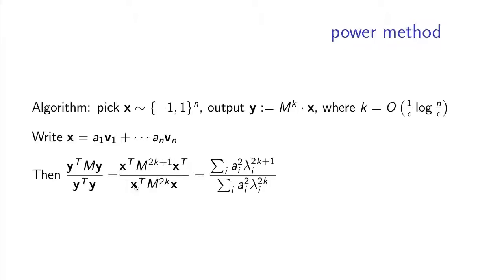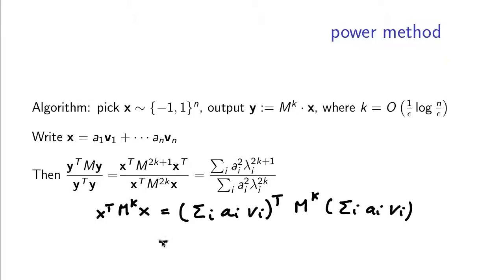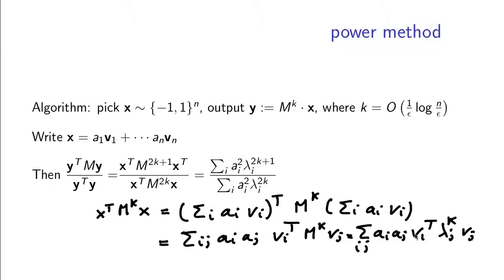What is x transpose times some power of m times x? We write x in the basis of eigenvectors. This will be the summation over i, j of ai aj times v_i transpose m to the k v_j. Now m times v_j is lambda_j times v_j, so m to the k times v_j is lambda_j to the k times v_j. The inner product of v_i and v_j is always 0 except when i equals j. So the whole expression is simply the summation over i of a_i squared times lambda_i to the k, since v_i transpose v_i equals 1.